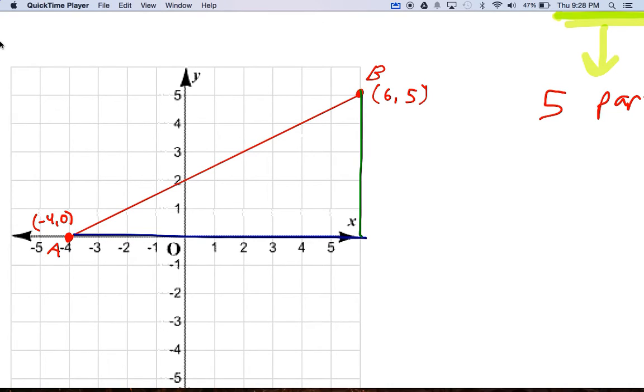Okay, so the horizontal distance, this problem actually works out nicely, was ten, and the vertical distance was five. So what we're going to do is divide these by five because there's five total parts. Divide by five, divide by five.